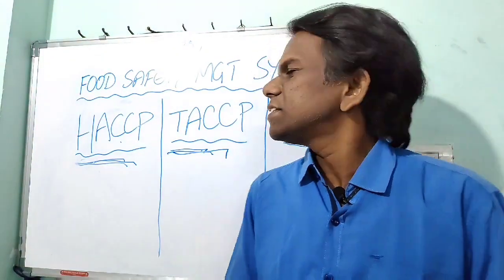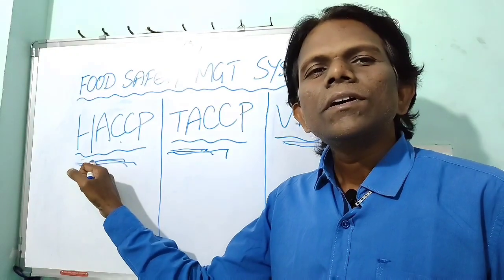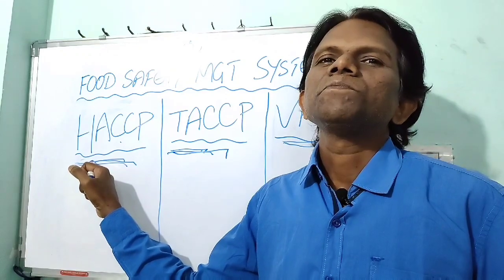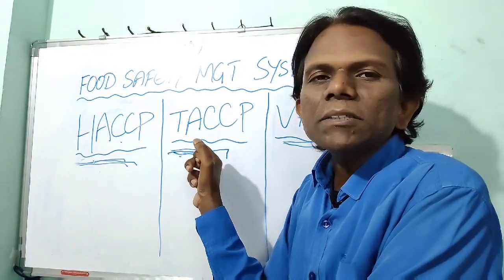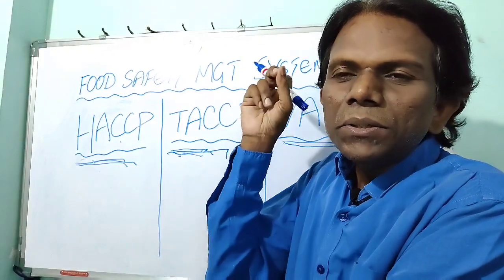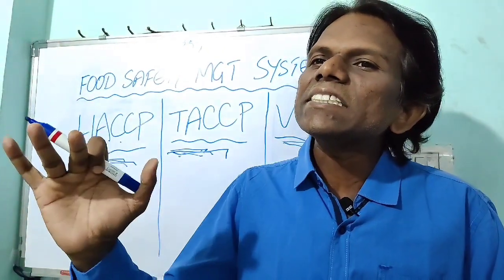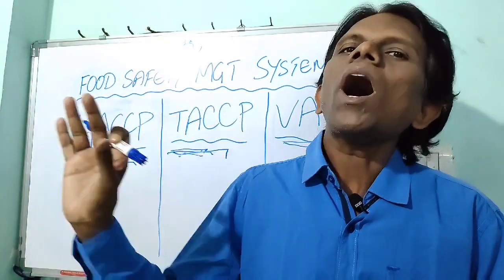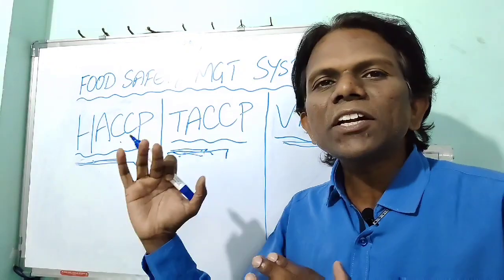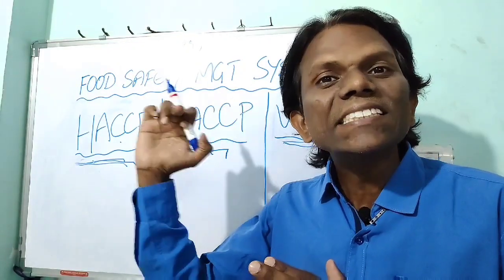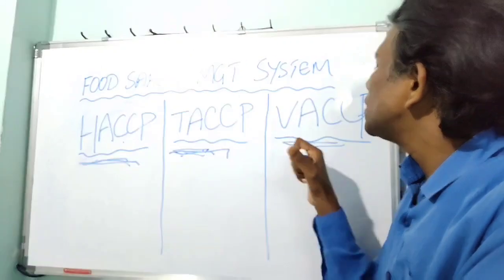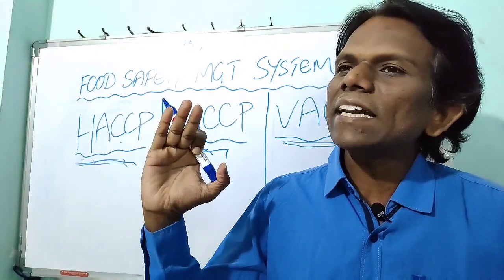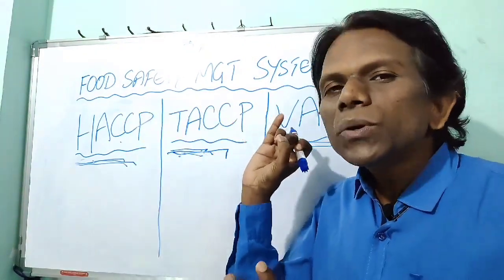The main purpose of HACCP is designed for controlling or prevention of unintentional contamination of food. TACCP is designed to prevent intentional adulteration in food, where the main purpose is to harm the public. So TACCP is designed to prevent those intentional adulterations.